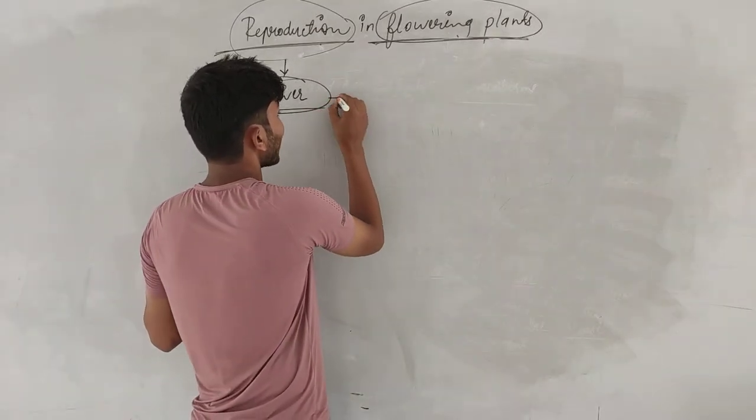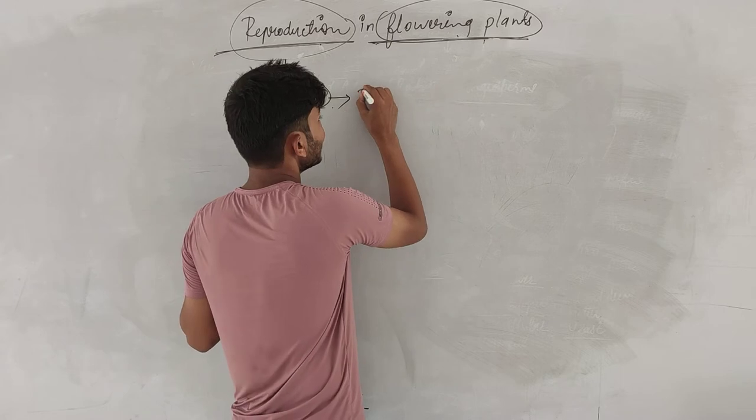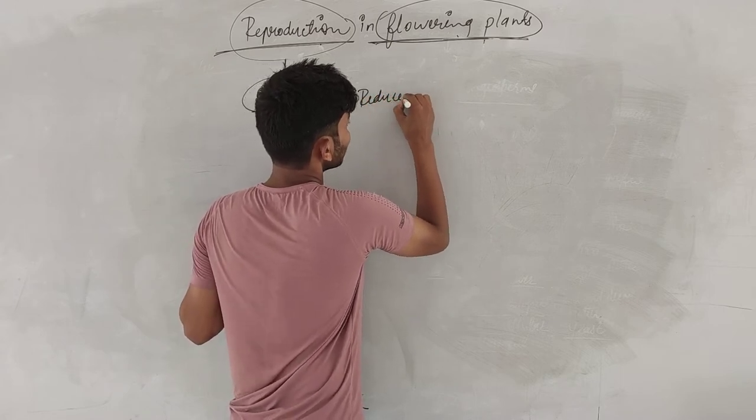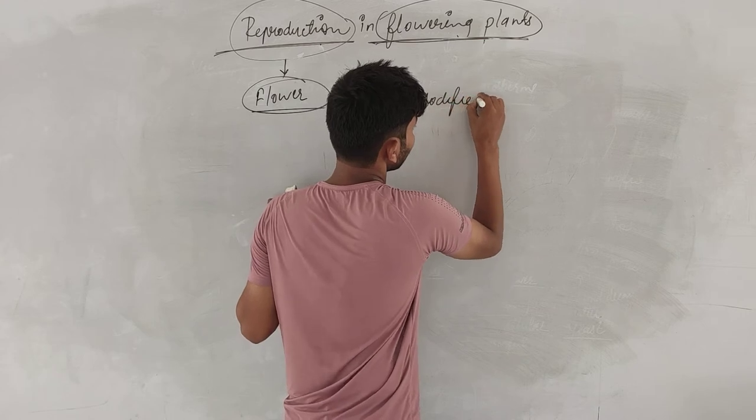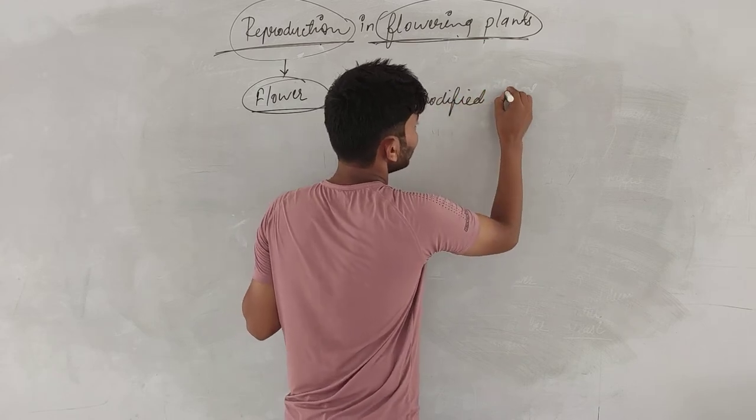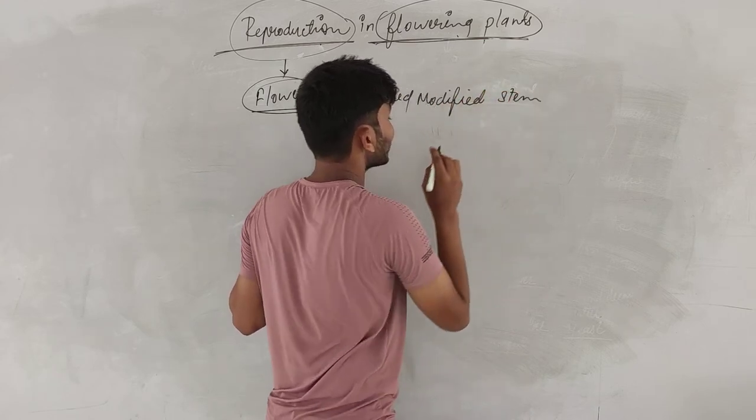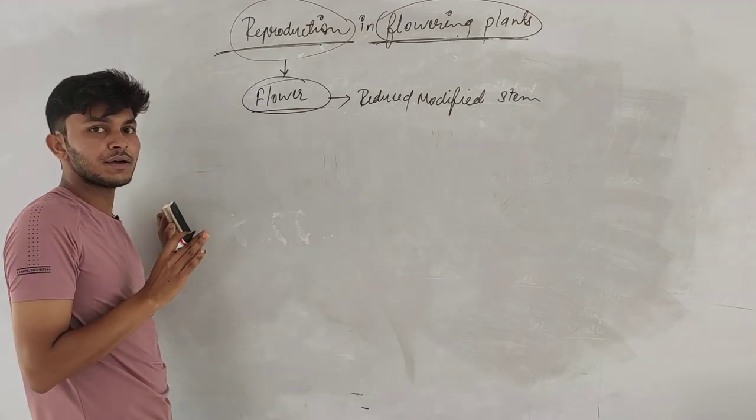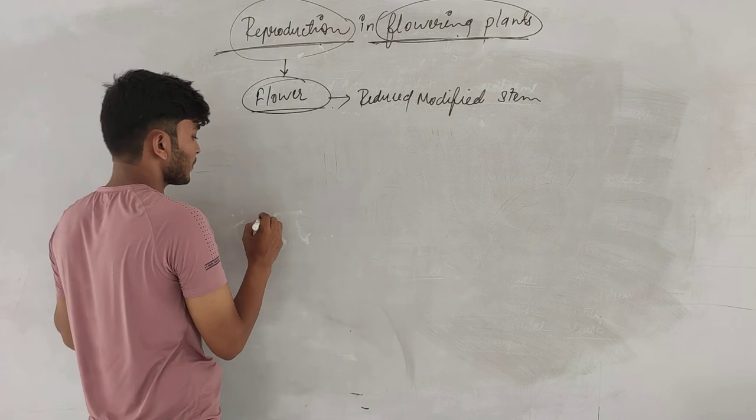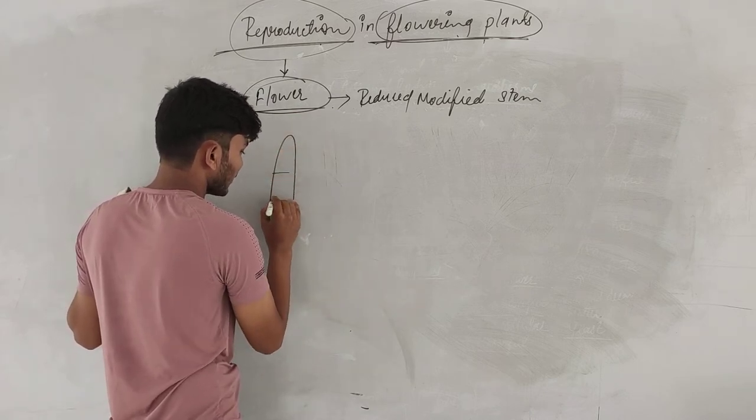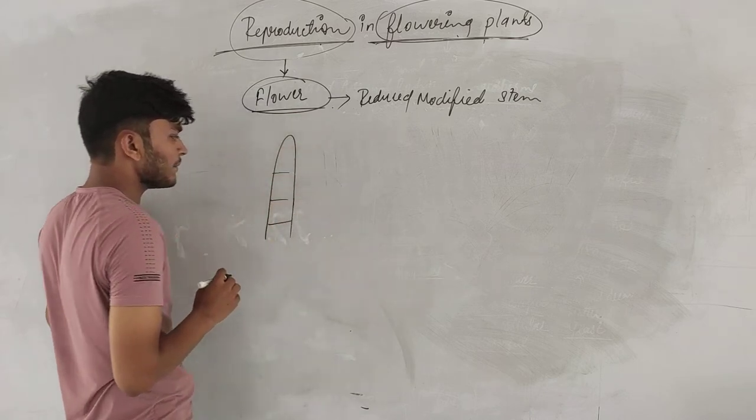Let's talk about this. The flower is reduced modified stem. This is a reduced modified stem. Right? How it is formed? Suppose that this is a stem. What is it? It is a stem.